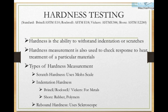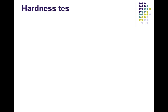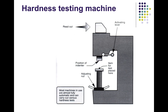The hardness testing machine is common to all three tests and is used for the Brinell, Vickers, and Rockwell hardness tests. You can see the various components — it has a position for the indenter, which gives a dent to the workpiece.